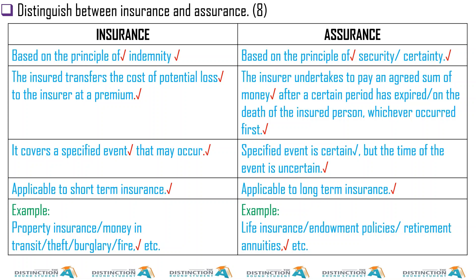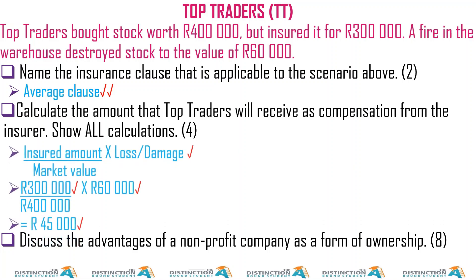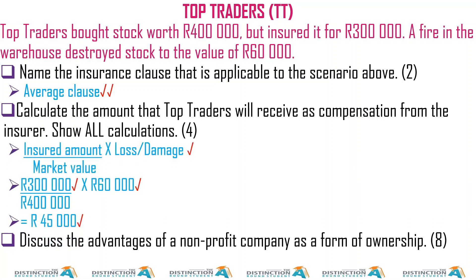Examples of insurance include property insurance, money in transit, theft, burglary, and fire. Examples of assurance include life insurance, endowment policies, and retirement annuities. Trade Traders bought stock worth 400,000 but insured 300,000 — average clause applies. A fire in the warehouse destroyed stock worth 60,000. Using the formula: 300 over 400 times 60,000 equals 45,000 — so the insurance company pays 45,000.